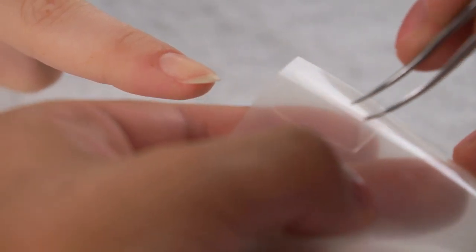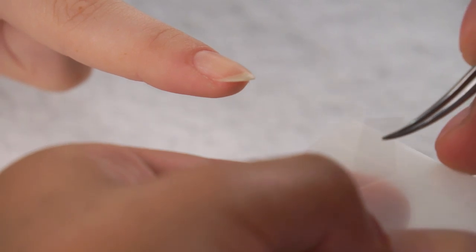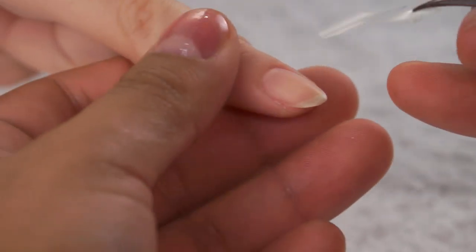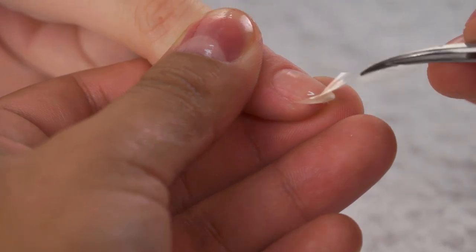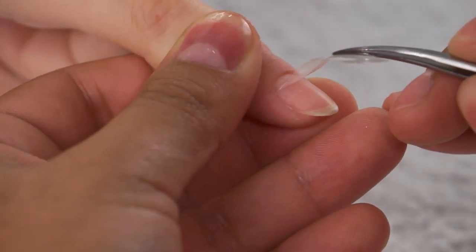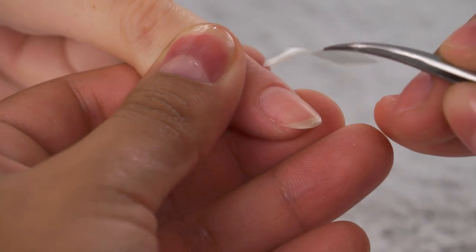Once we have the correct size we're going to get our tweezers and peel off the Minx coat. You want to be very careful that you apply the Minx coat without touching the part that will be covering the nail plate.